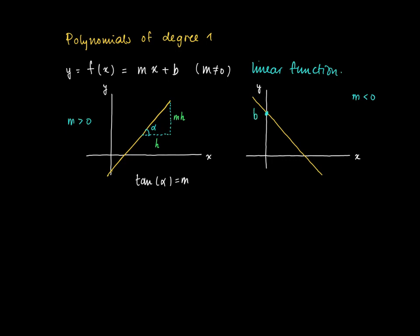The other picture is where m < 0. Then the slope is negative. At zero we get the value b on the y-axis.